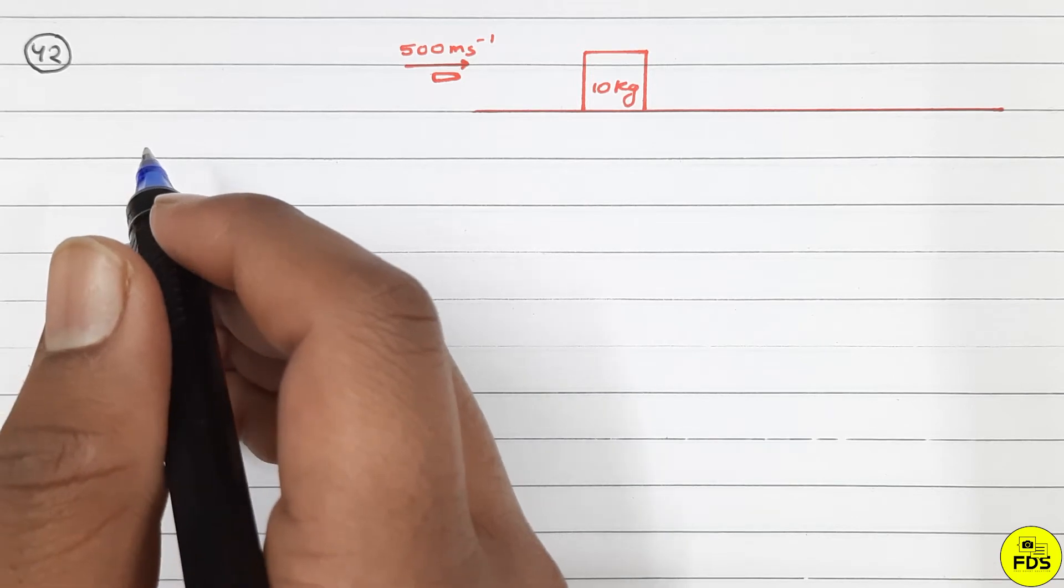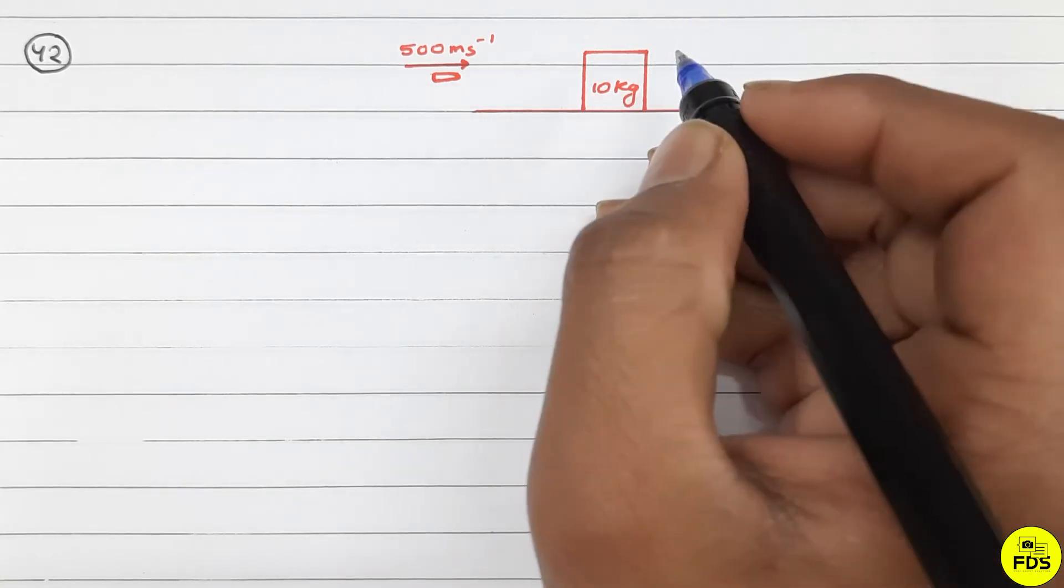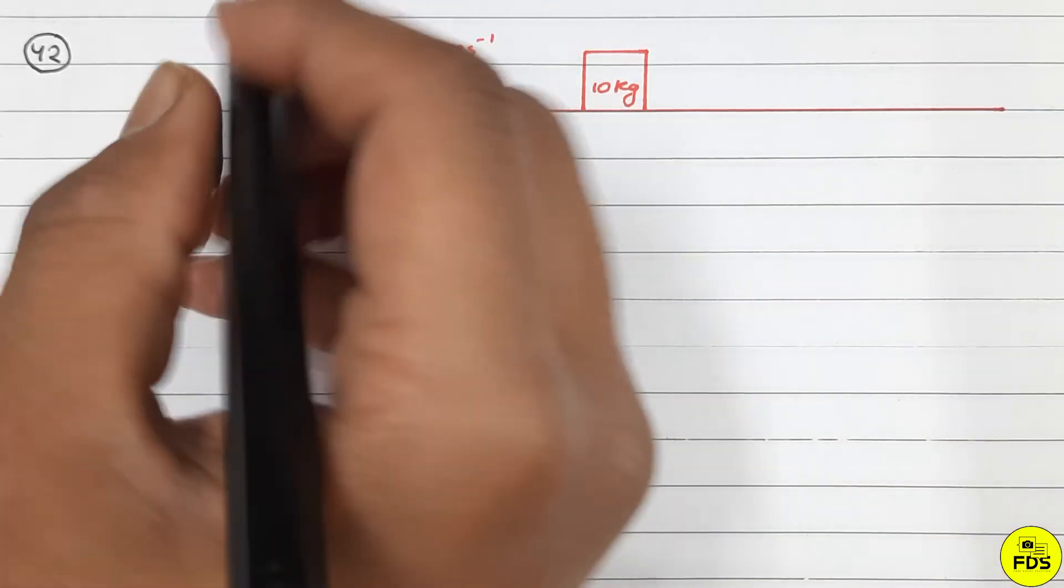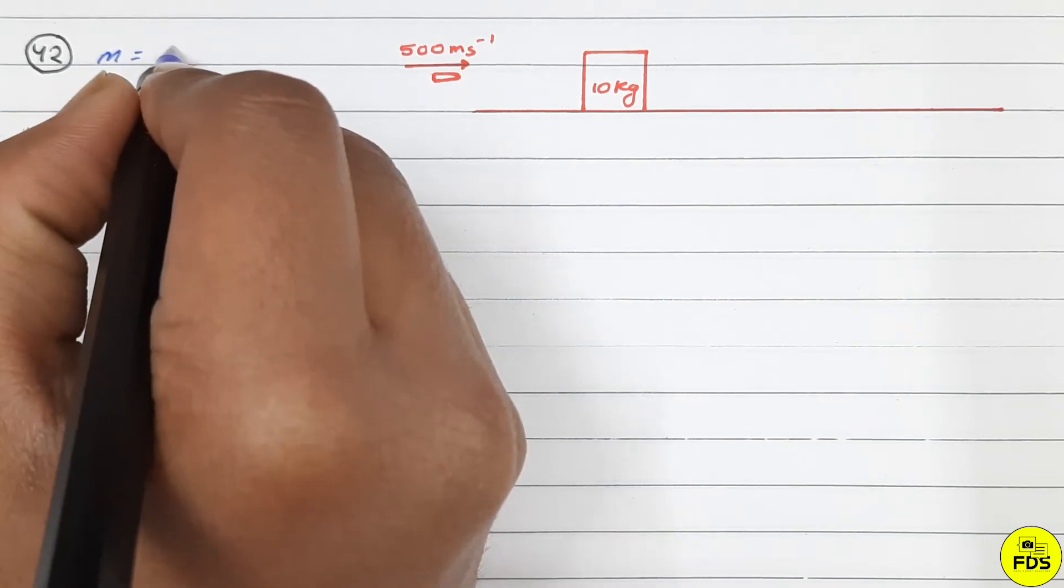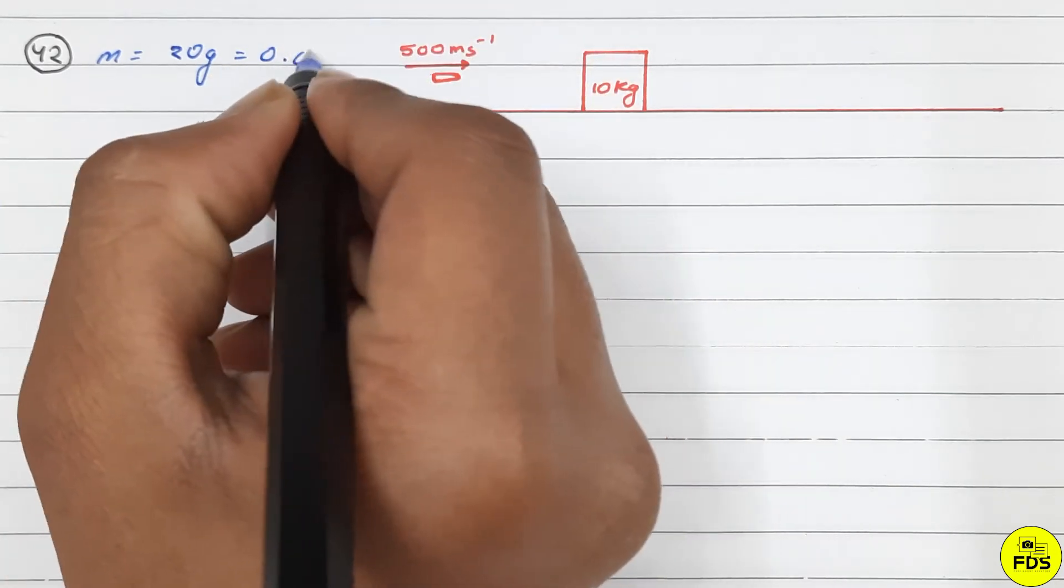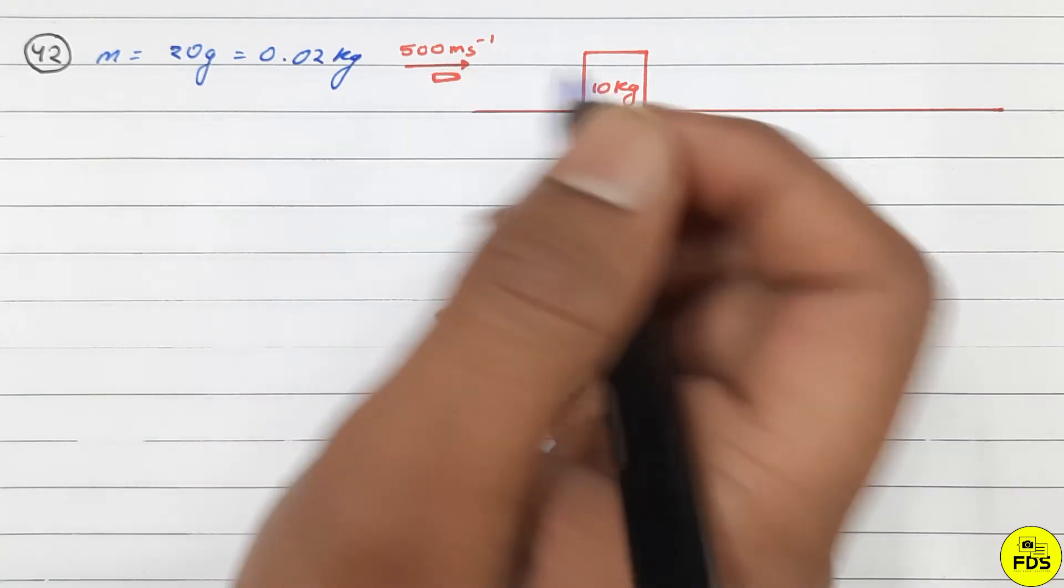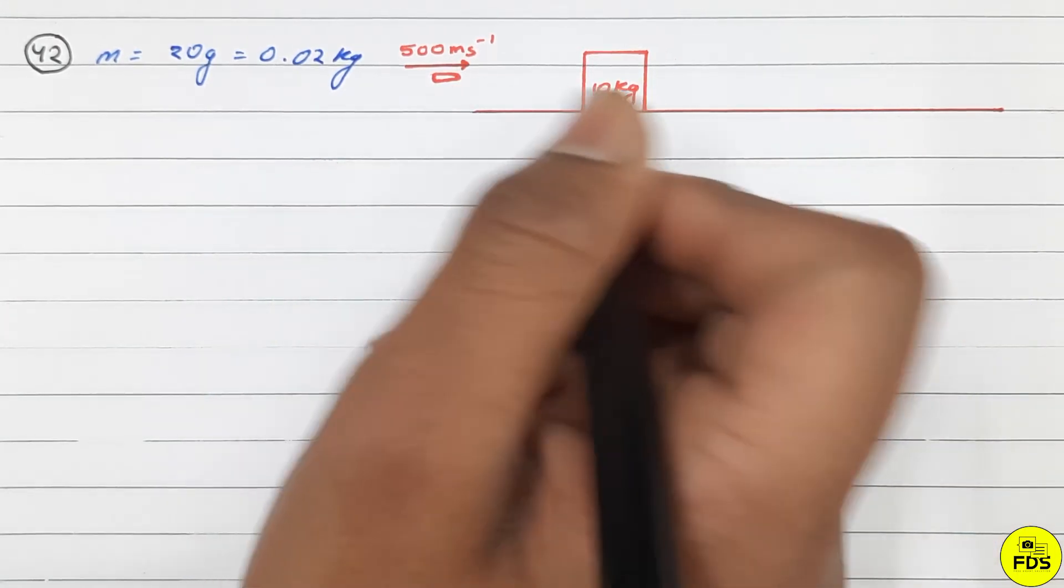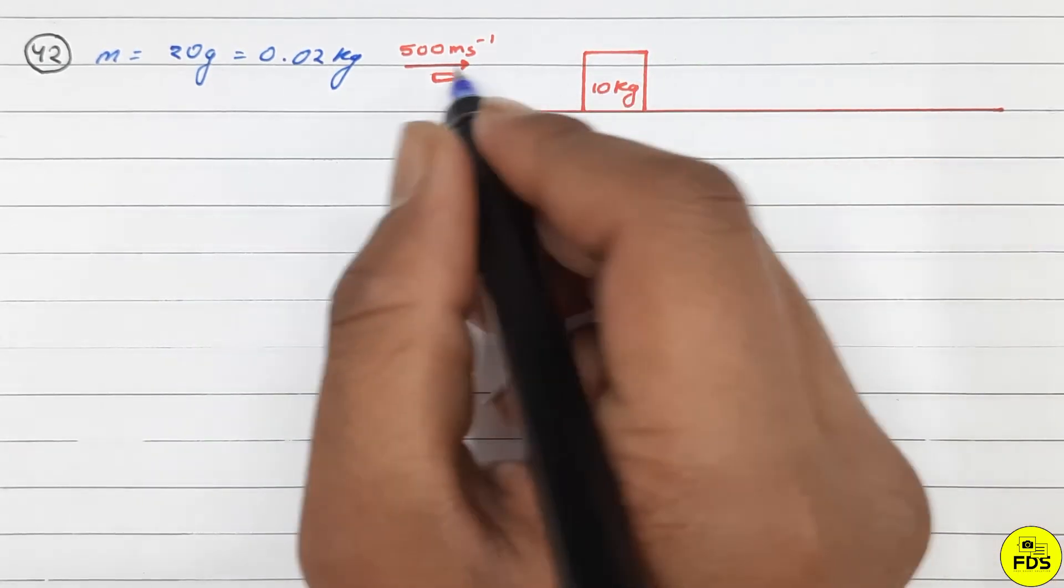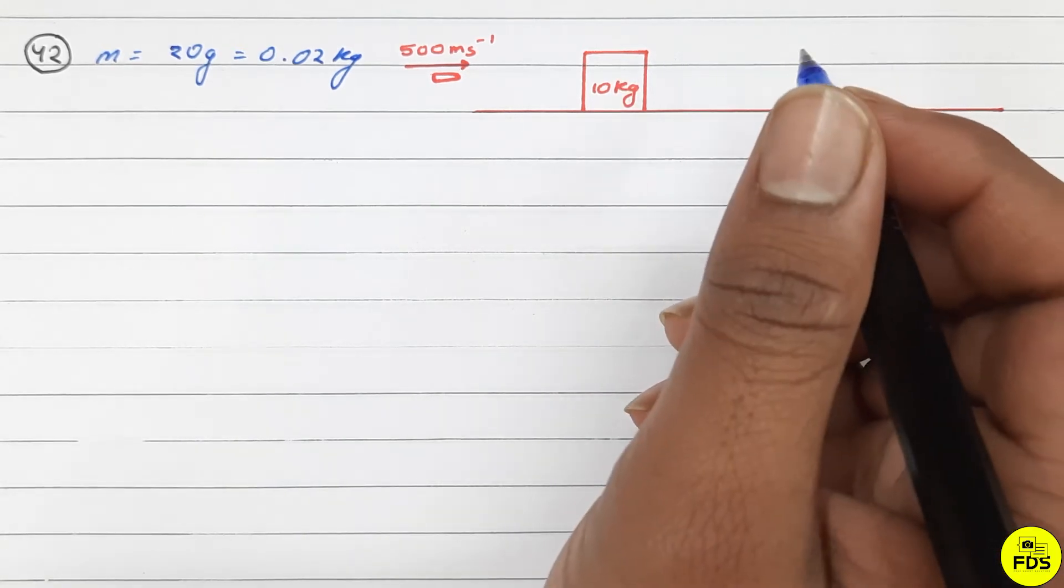Okay, so here we have a bullet, and here is a 10 kg block. The bullet has a mass of 20 grams, which is 0.02 kg. The bullet enters at 500 meters per second and emerges at 100 meters per second.